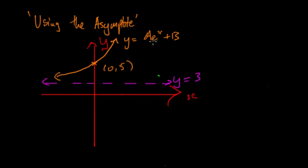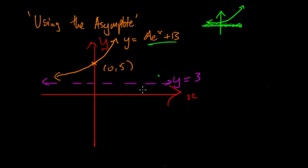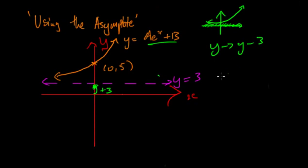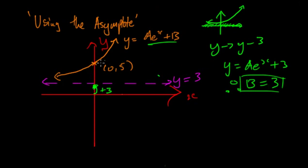Now looking at the next example — we have y = 3 as an asymptote on an exponential, so we know the graph has been shifted up. The normal exponential has an asymptote at y = 0. To move the asymptote up, there needs to be a translation of plus three units. To achieve this you replace y with y - 3, which gives y = a^x + 3, because you add three to the other side.